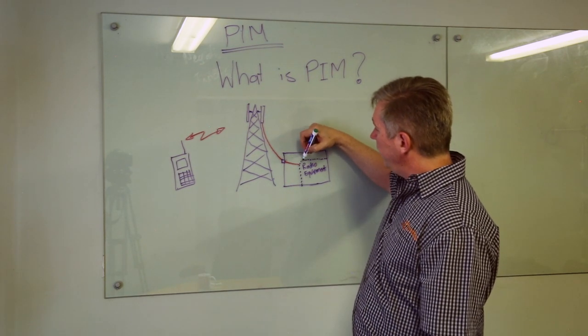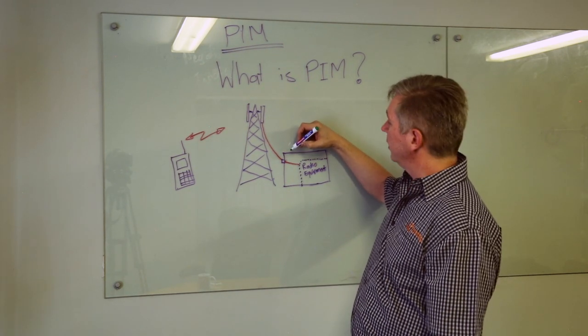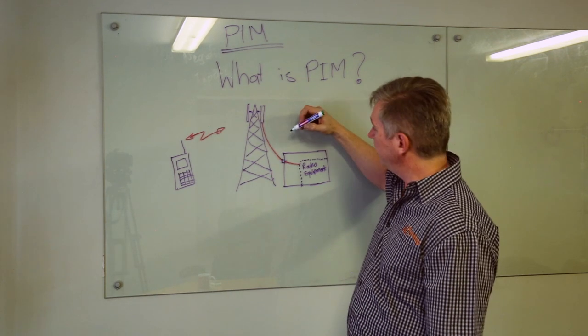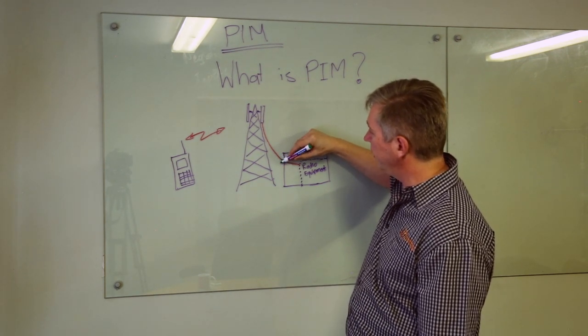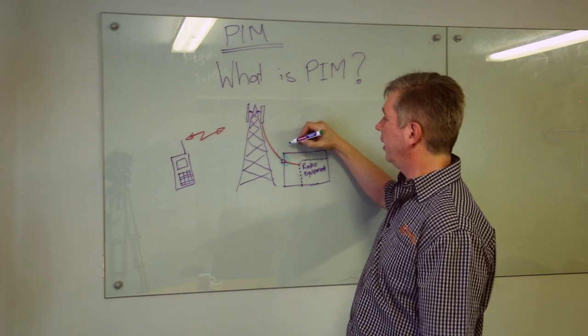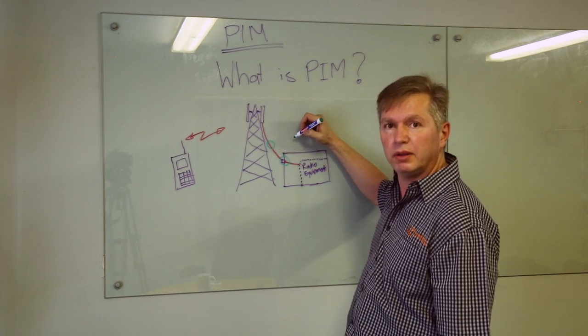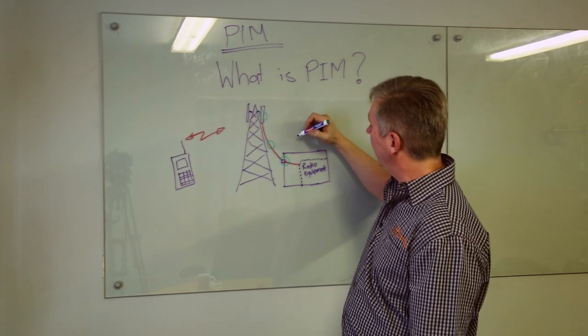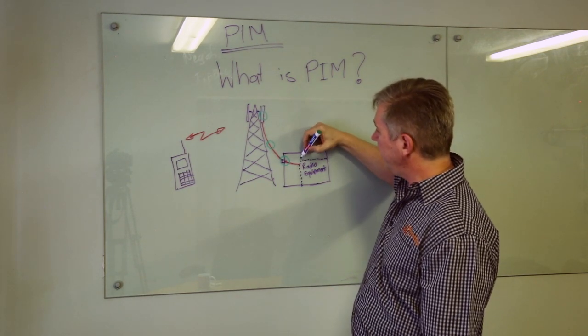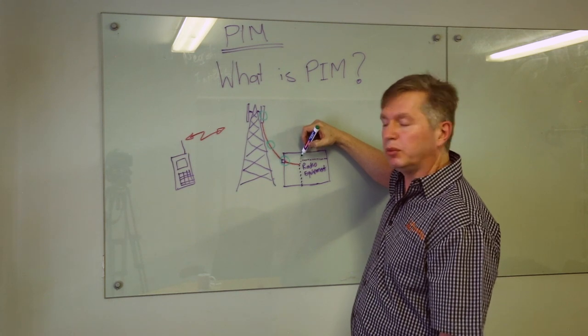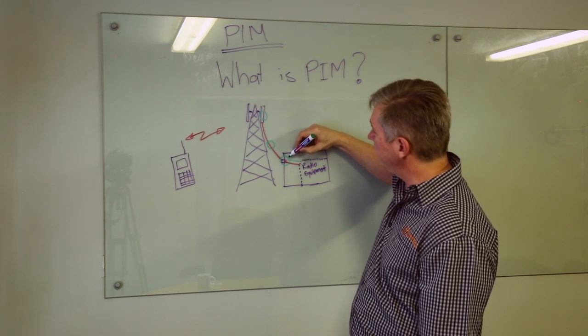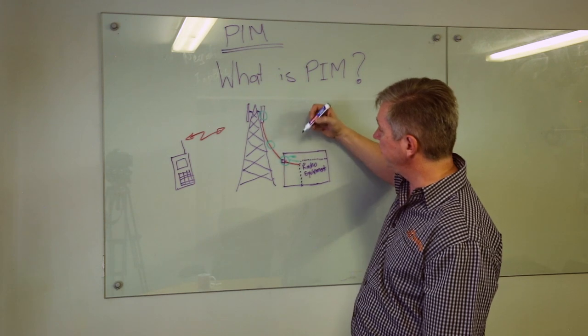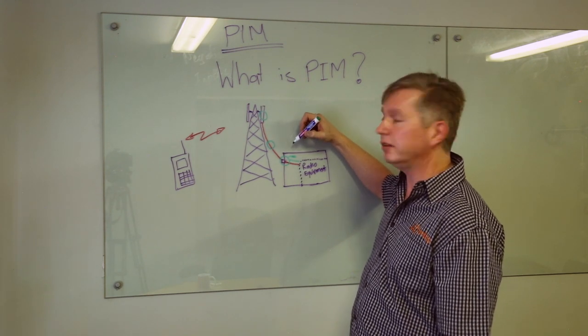So what happens with a base station as an example is you may have a non-linear point where either in your coax cable, it could be in your connectors, it could be in your antenna. And what effectively happens is with intermodulation the signal is reflected on a different frequency band at different points in the system.